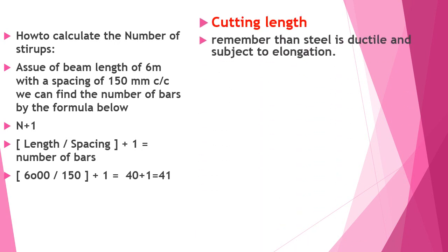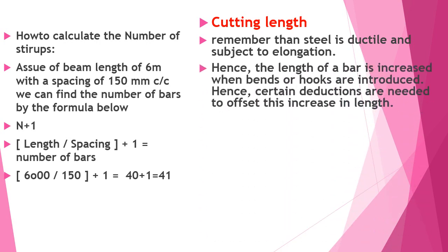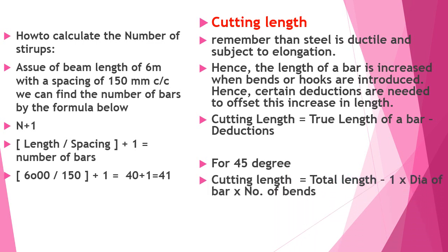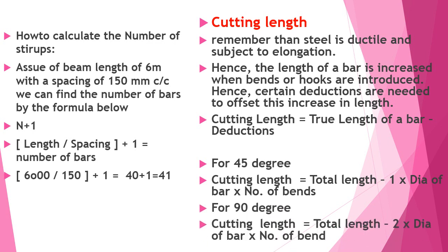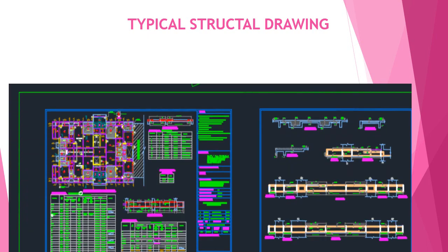Cutting length: Steel is ductile and subject to elongation. Hence, the length of the bar increases when bends or hooks are added. To accommodate this, certain deductions are needed to offset the increase in length. Cutting length is nothing else but the true length of a bar minus the reduction. For a 45-degree bend, it is total length minus 1 dia of the bar multiplied by number of bends. For 90-degree, it is total length minus 2 dia of the bar multiplied by number of bends.